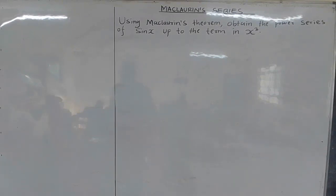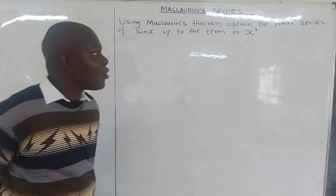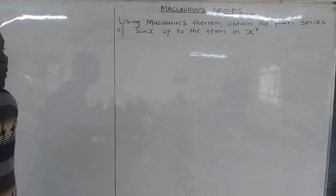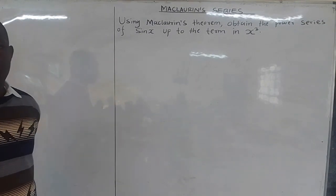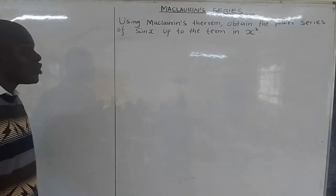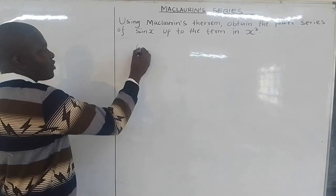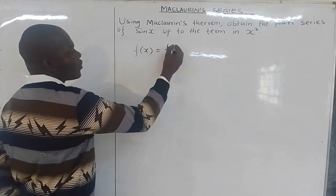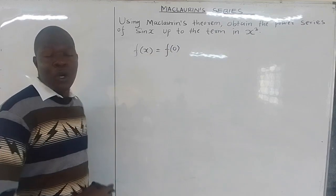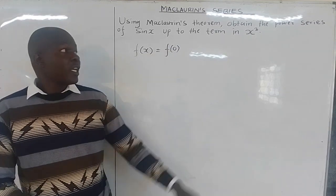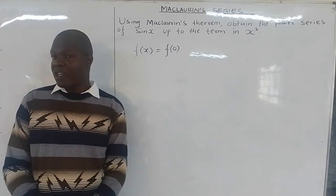Using the Maclaurin series, obtain the power series of sine x up to the term in x cubed. The Maclaurin series is the special case of the Taylor series where a equals zero. When expanding a function in the Maclaurin series, you start from n equals zero. The Maclaurin series is built as a power series in x, which is why you get terms like x cubed.